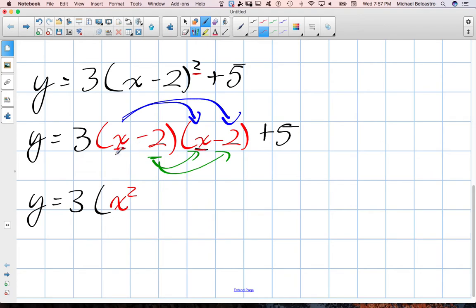Next, I'm going to do X times negative 2. Negative 2 times X is just going to give me negative 2X, okay? Then I'm going to do the second term in the first set of brackets. Negative 2 times X. I've already done that once. That's negative 2X. And then negative 2 times negative 2. Negative times negative is positive. Negative 2 times negative 2 is 4. We get positive 4, okay?